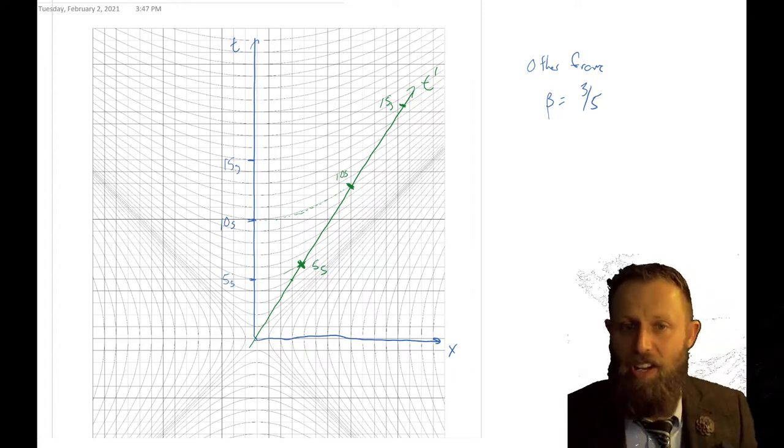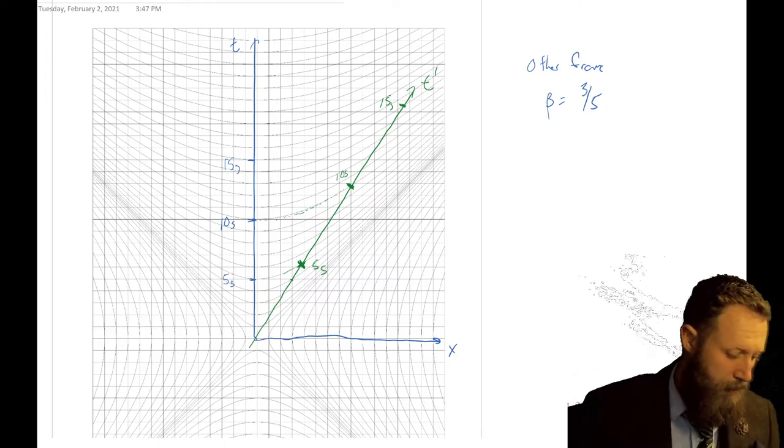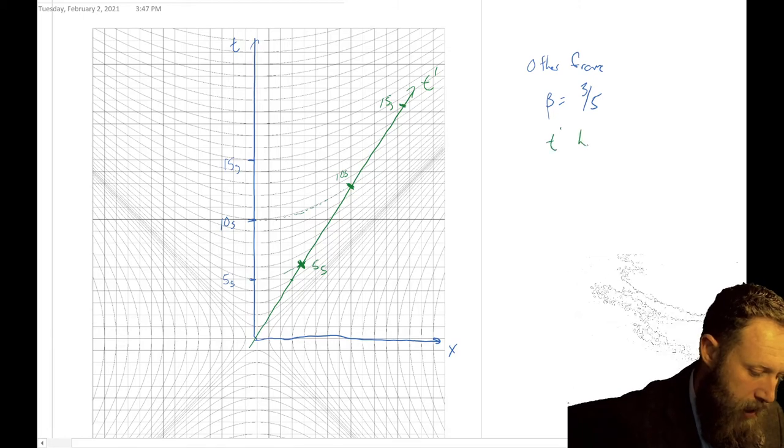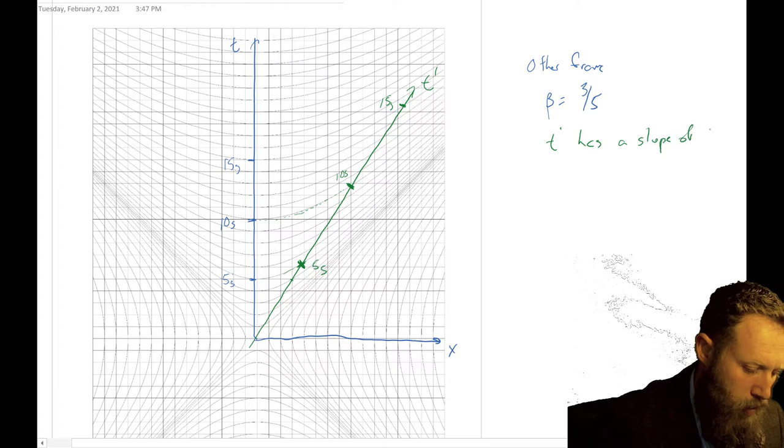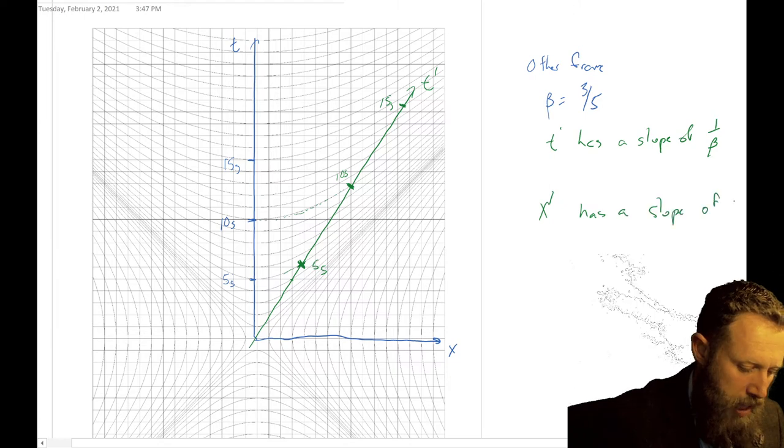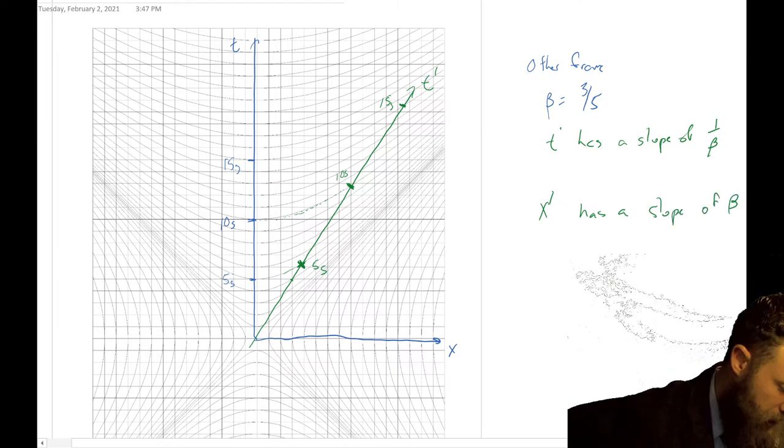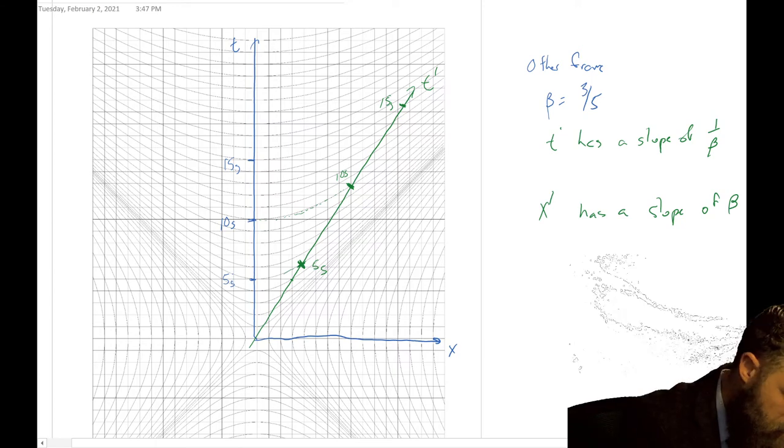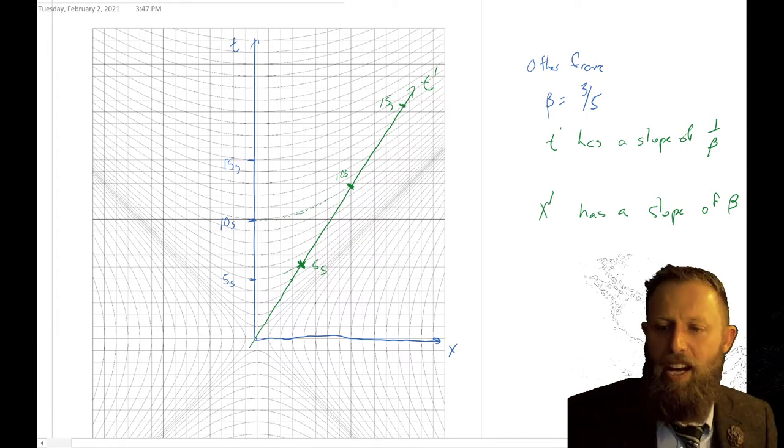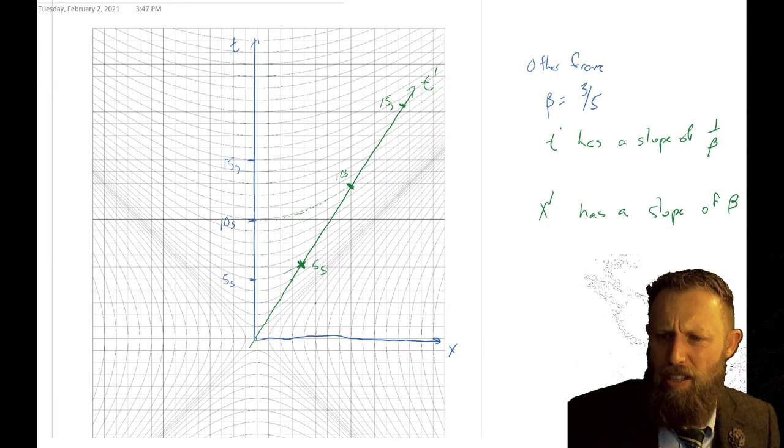We also need to draw an x prime axis for it to be any use to us. It turns out the x prime axis, so the t prime has a slope of one over beta. x prime has a slope of beta, it turns out. So our beta is three fifths. So now we're just one, two, three, four, five, one, two, three. There is a derivation for why this is true. I am actually not going to go into it, is relatively involved. I recommend checking out your book.